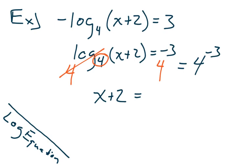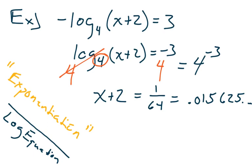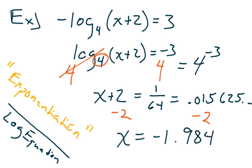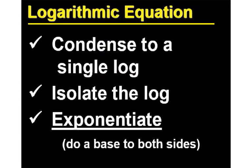Four to the negative three power equals one over 64. On a calculator that gives a decimal value. The key thing is to base both sides — this is called exponentiation, but I like to call it the ace of base. You still have to subtract two, and working with decimals we end up with x ≈ −1.984. When you have a log equation, condense to a single log, isolate the log, then exponentiate — do the ace of base to both sides.